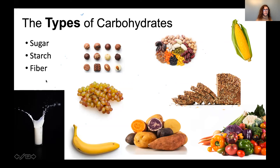Fiber is found in unprocessed and minimally processed forms of carbohydrates, such as whole wheat or whole grain bread. Fiber is the part of carbohydrates that is not digestible, so it contributes to bulking the food in your stomach and slowing down digestion. It has a very important role in disease prevention and helping with weight management.